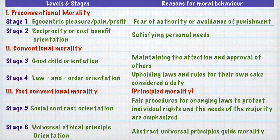Lawrence Kohlberg studied the development of moral thinking in children using a dilemma called the Heinz Dilemma. By presenting the Heinz Dilemma to children of different ages and analysing their responses, Kohlberg arrived at his theory of moral development. A summary of the theory is shown in the visual. According to Kohlberg, children develop moral reasoning as they develop their cognition, so cognitive development as given by Piaget and moral development as given by Kohlberg happen simultaneously as the child develops.